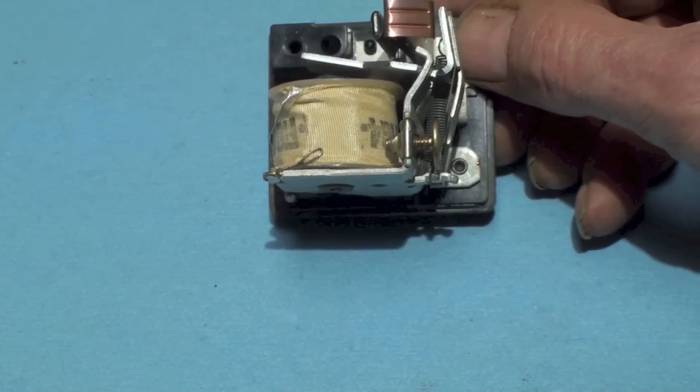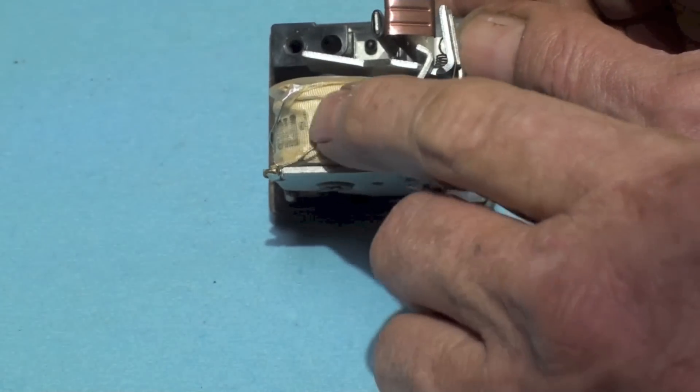I will take this cover off here and show you the windings. Okay, here's a look at the coil close-up. You can see how small that wire is. The reason that wire is so small is because you don't want that thing energizing until you get a very high voltage.